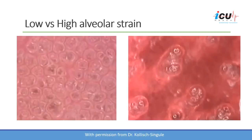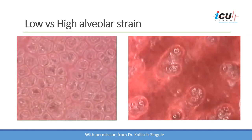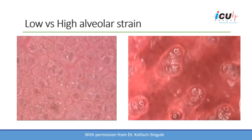Take a look at some videos taken by a videoscope placed directly on the surface of the lung. On the left side we have a healthy lung, and notice that with inspiration the alveoli are barely moving — the alveolar space is only slightly increased in inspiration compared to expiration. Thus the strain at the level of the alveoli is very minimal.